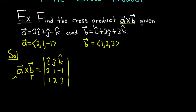So again, in the first row you always have i-hat, j-hat, and k-hat. Then you have vector A, then you have vector B. Then what you do is go one piece at a time. We're first going to focus on the i-hat piece.